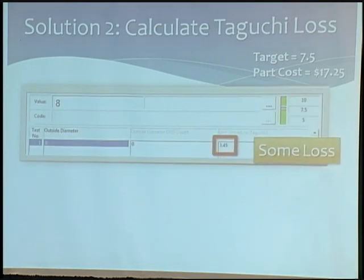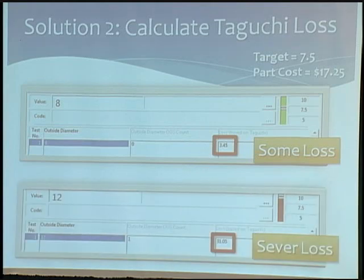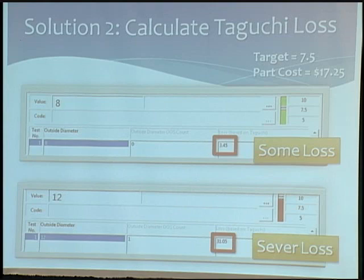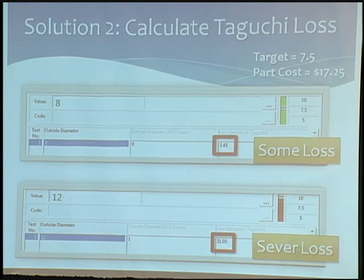Here's a value that came in at 8 — well within spec — but when we compare it to the loss function, we've got a loss of $3.45 at that point. Or if we take something that's way out of spec, the loss keeps going beyond $17.25 — we keep applying the math, and it's a $31 loss. The reason is that if that part escapes and gets further down the line with more value added, then you need to account for more cost when it's discovered.